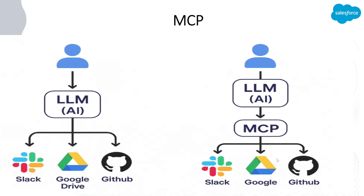Similarly, Google Drive will give you different tools to perform different activities on Google Drive. Now through MCP, we will be able to connect to all of these different services and access all of these tools. So when a user asks the AI agent to send a message to Slack, using this MCP server it will check what tools are available through the Slack server — one of those tools would be 'send a message' — and using that tool it will be able to send the message.